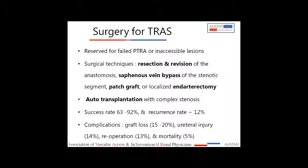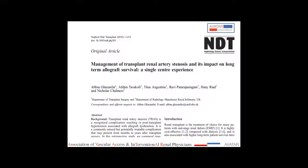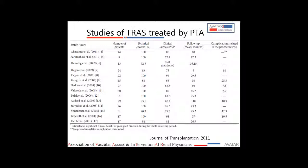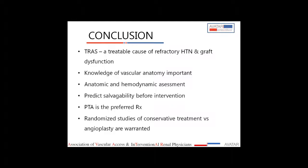The role of surgery is very minimal in TRAS — reserved for failed PTA or inaccessible lesions. Various surgical techniques are available, and sometimes to minimize ischemia time, auto-transplantation may be required. The success rate is good but morbidity and mortality are high, which is why surgery is generally avoided unless the case is complex. An NDT article retrospectively studying outcomes of all three modalities showed that in hemodynamically significant stenosis, PTRA has the best outcome; surgical and conservative therapy have poorer outcomes. Technical and clinical success rates are higher with PTA, and complications are less than 10%.